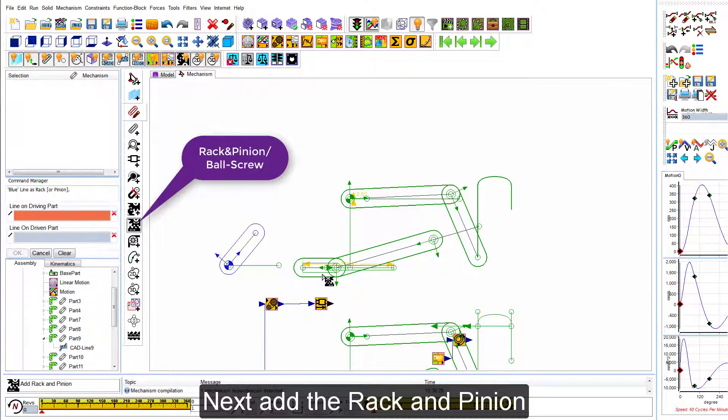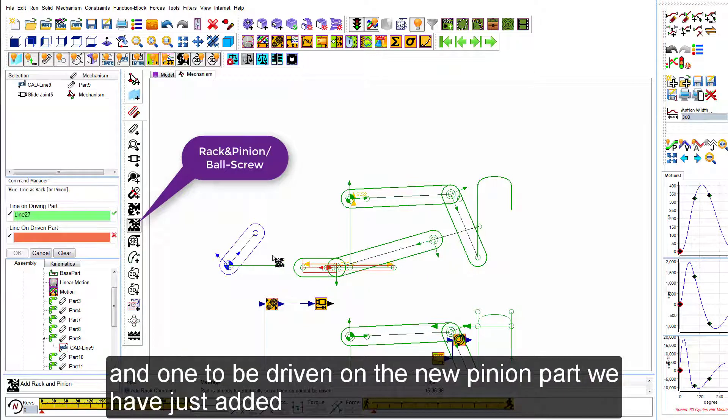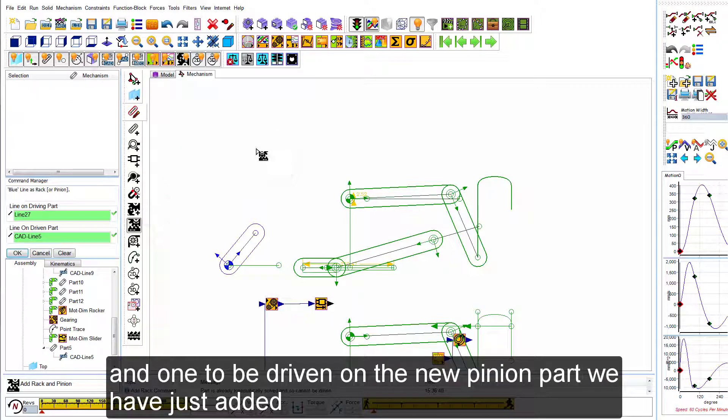Next, add the rack and pinion. It needs only two lines, one driving on the slider and one to be driven on the new pinion part that we have just added.